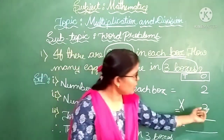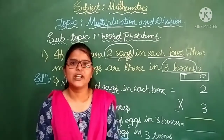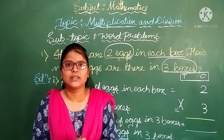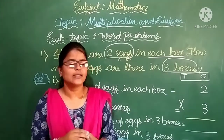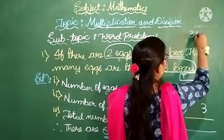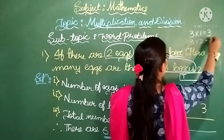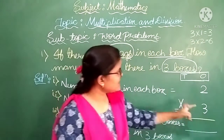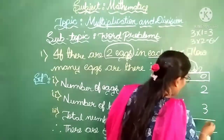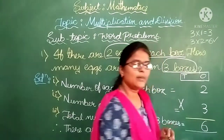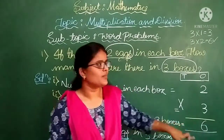3 into 2, or 3 twos are dash. Remember the table of 3: 3 one is 3, 3 twos are 6. Write down this 6 under the 1s column.